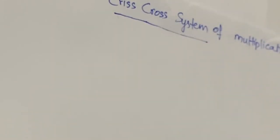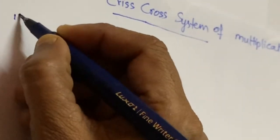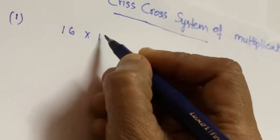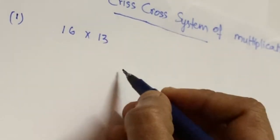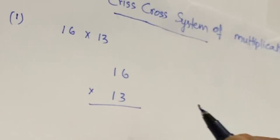We'll compare the traditional method and the criss-cross system of multiplication. This multiplication system is very convenient — you can do your calculation mentally and get the answer within seconds if you practice. First we take a simple example: a two-digit number, 16 multiplied by 13.